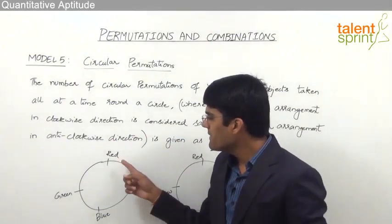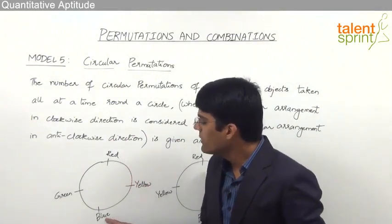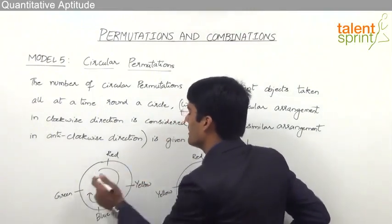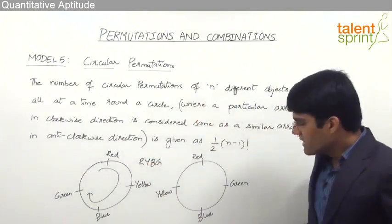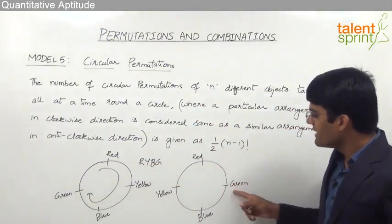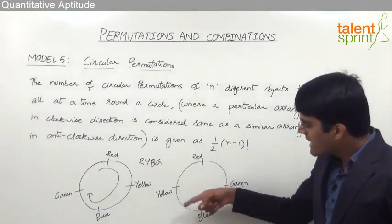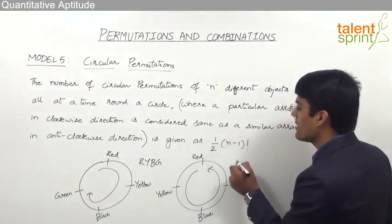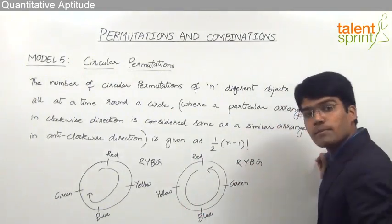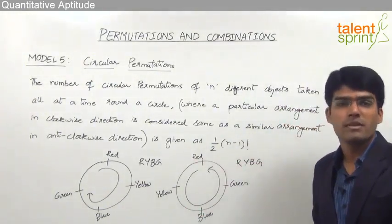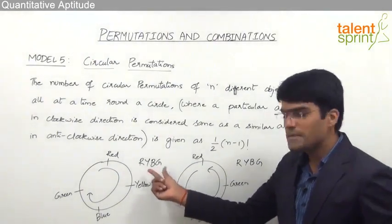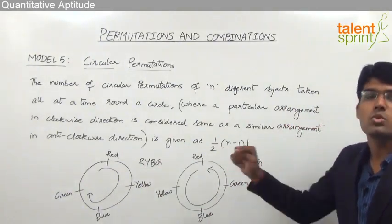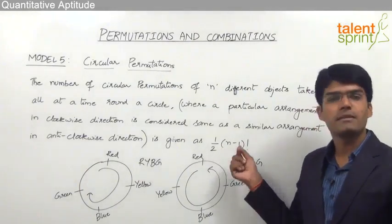For example, one arrangement has beads in clockwise order R, Y, B, G. In a second arrangement the clockwise order is R, G, B, Y, but going anti-clockwise this also gives R, Y, B, G — the same order as the first. These two arrangements are considered to be the same because in the clockwise direction it is R-Y-B-G and in the anti-clockwise direction it also results in R-Y-B-G. Hence the answer is half of (n-1) factorial.